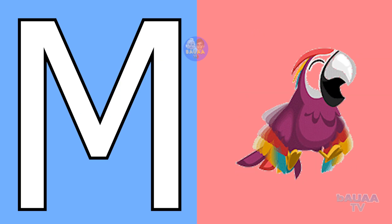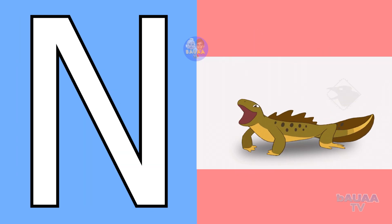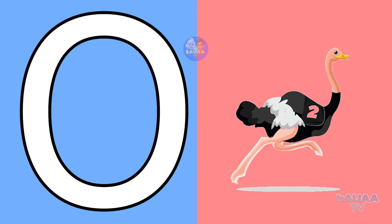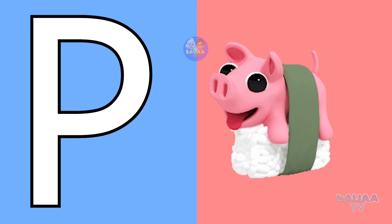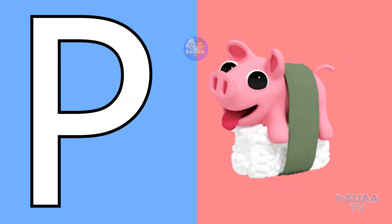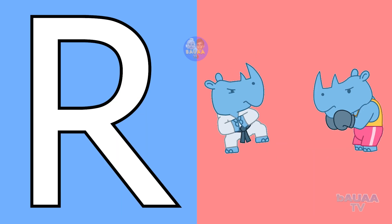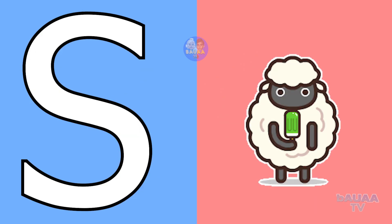M for macaw, N for newt, O for ostrich, P for pig, Q for quail, R for rhinoceros.